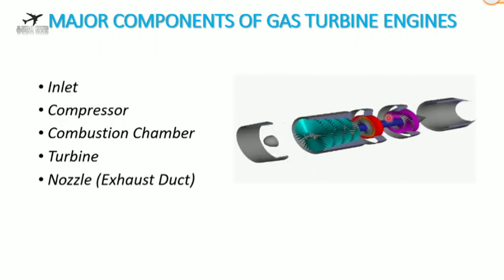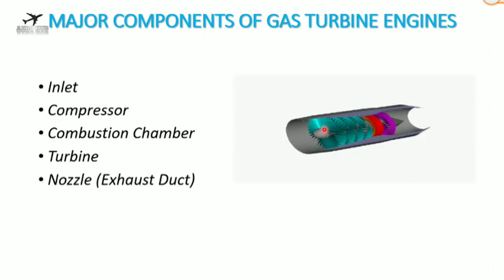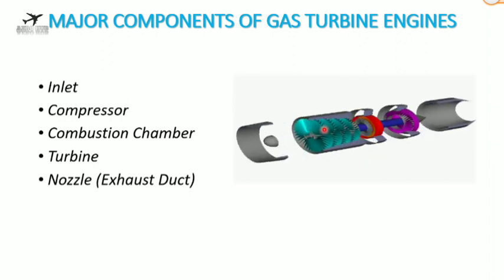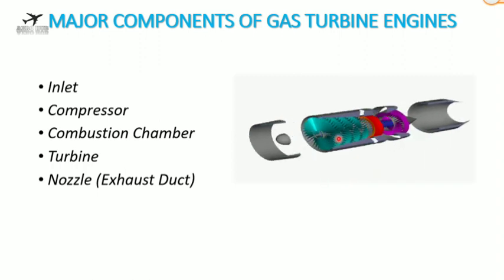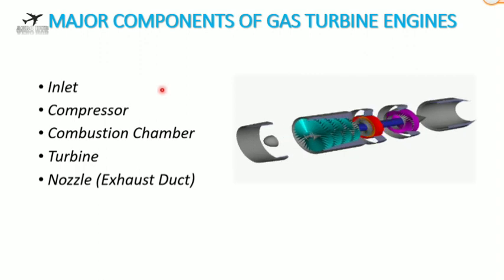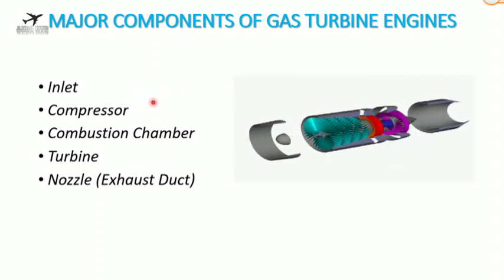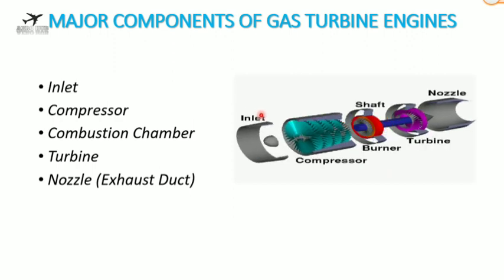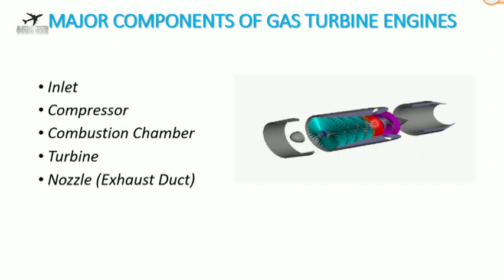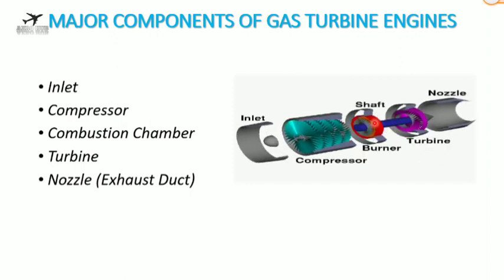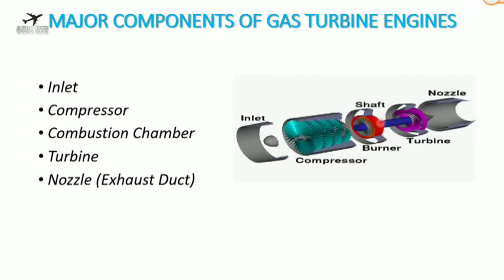Air enters the intake of the engine. The intake ensures smooth airflow, which then gets compressed in the compressor — this increases the pressure and velocity while decreasing the temperature. Once the air is compressed, the air-fuel mixture is burned in the combustion chamber. Aviation gasoline is used as fuel.